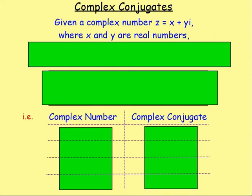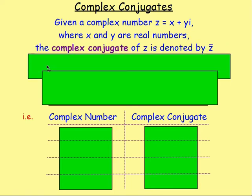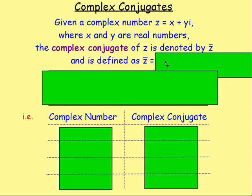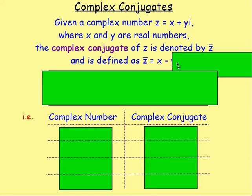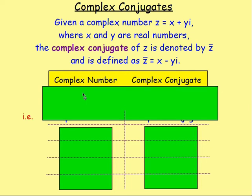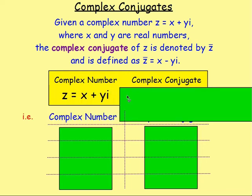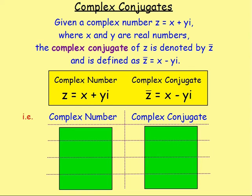Moving on to complex conjugates. If Z = x + yi, the complex conjugate of Z is written as Z̄. To get the complex conjugate, leave the real part as it is but change the sign of the imaginary part. So Z = x + yi gives Z̄ = x − yi.